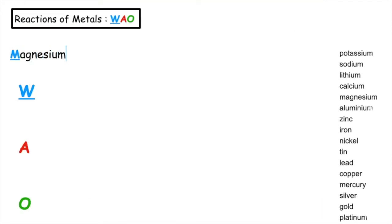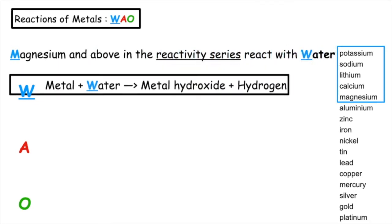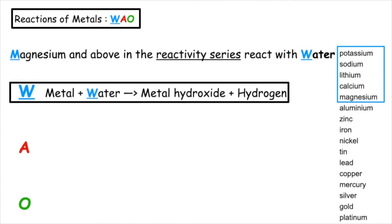Magnesium and above in the reactivity series react with water. Remember, metal plus water produces metal hydroxide plus hydrogen gas. A way to remember this is a little story. My lovely chemistry. Magnesium and above react with water. Lead and above react with acids. And copper and above will react with oxygen.